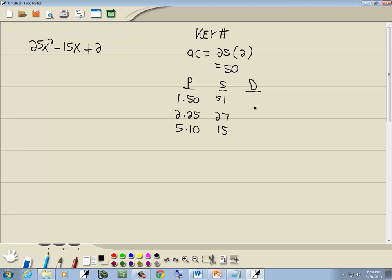In the difference column we subtract the smaller from larger. 50 minus 1 is 49, 25 minus 2 is 23, 10 minus 5 is 5. Now the number we're looking for is a number in our middle term, which is 15, which is right here. So we're going to use 5 and 10.